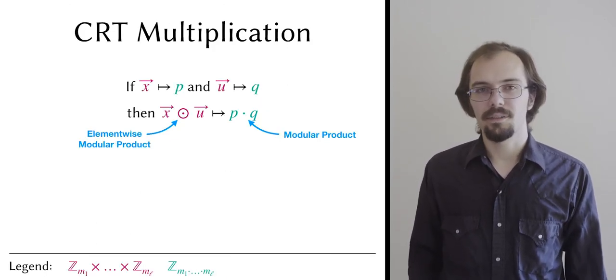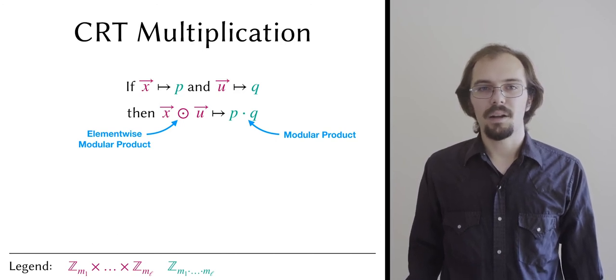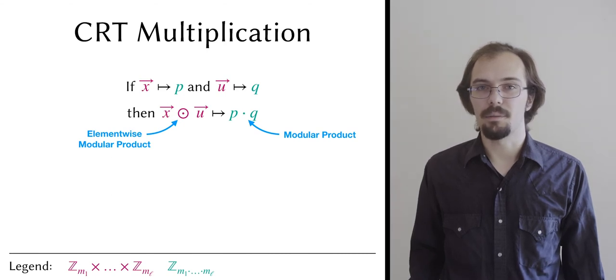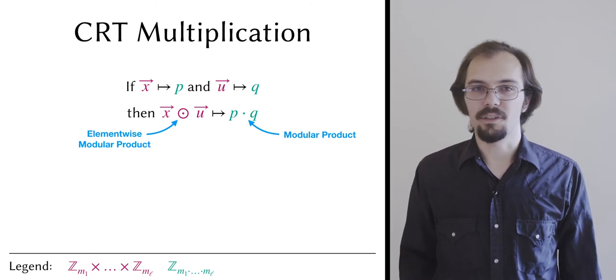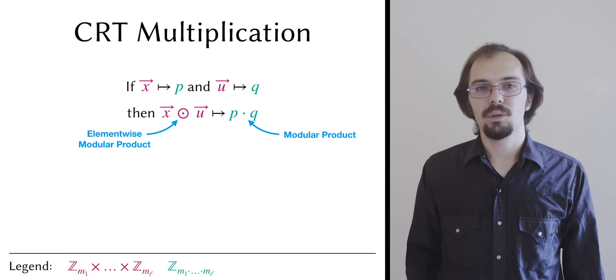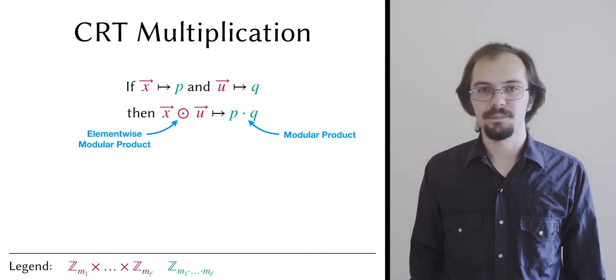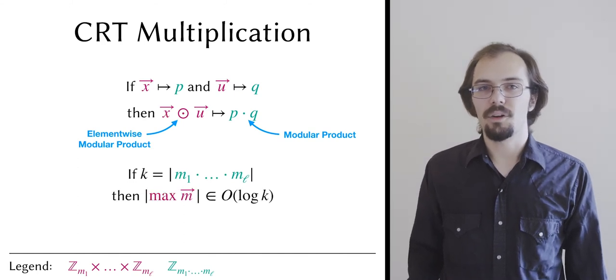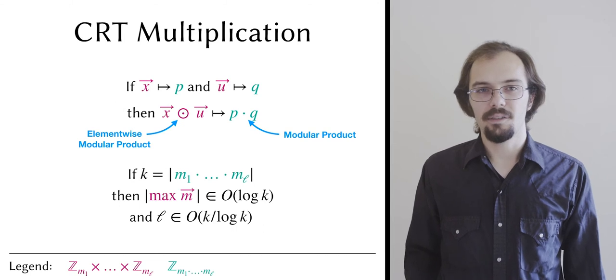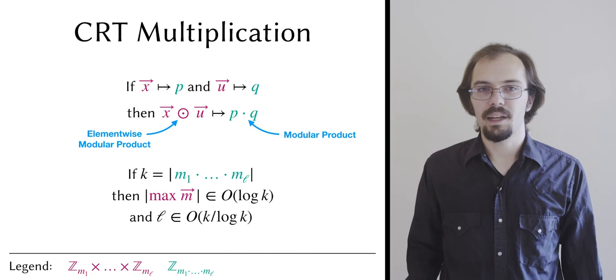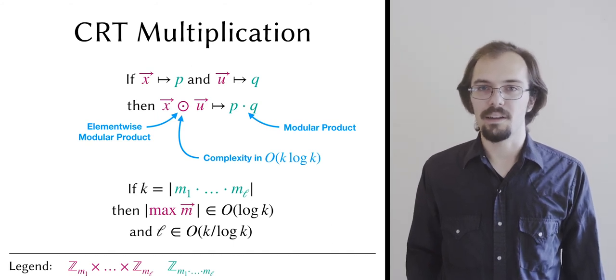Once again, consider the single-party case. We observe that if we take two CRT form values, x and u, defined with respect to the same primordial vector m of length l, then the product of their corresponding standard form values, p and q, modulo the lth primordial number, corresponds to the element-wise modular product of x and u. Here, I'm using the circle dot to represent element-wise multiplication. This means that if we want the standard form product of p and q, we can multiply the CRT form values, x and u, element by element, then evaluate the mapping, instead of evaluating the mapping before multiplication. We can show that if a primordial number has k bits, then the length of the largest prime in the corresponding primordial vector is in O of log k, and also that l, the length of the primordial vector, is in O of k over log k. Consequently, if our fundamental multiplication complexity is quadratic, then we can multiply two k-bit numbers in CRT form in complexity O of k log k, as opposed to O of k squared if we did it naively.